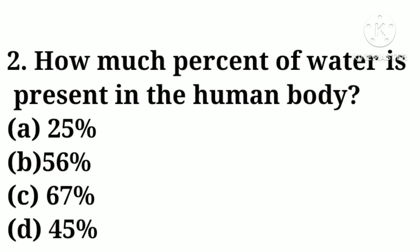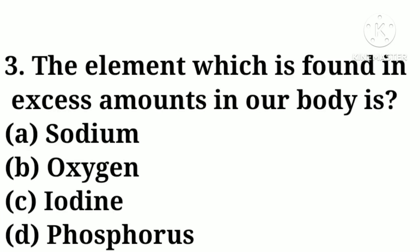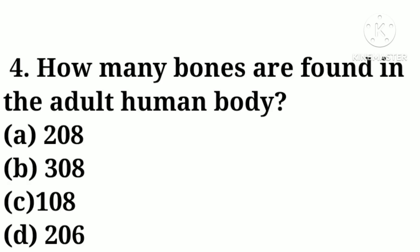Option C: 67, option D: 45. Correct answer: option C, 67 percent. Question number three: the element which is found in excess amount in our body — option A: sodium, option B: oxygen, option C: iodine, option D: phosphorus. Correct answer: option B, oxygen.